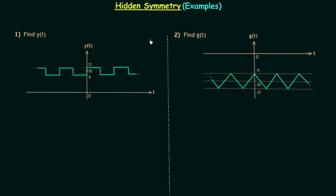In the previous two lectures we had discussion on different symmetries in Fourier series expansion and now in this presentation we are going to extend our discussion on hidden symmetry by solving two examples. Our task is to find if there is any hidden symmetry and if there is hidden symmetry then by using it we need to comment about the Fourier series expansion.